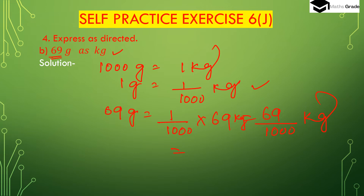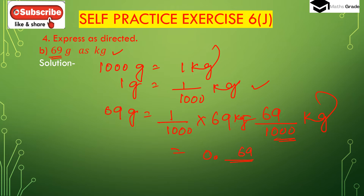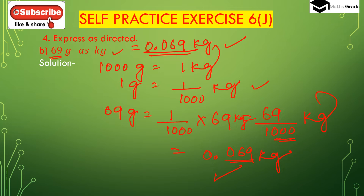In the denominator, 1000 has 3 zeros, so we have to place three digits after the decimal place. But in the numerator there are only two digits, so we have to place one zero before the digit 6. It will be 0.069 kg. If the numerator has only a single digit, we place two zeros before it. So 69 grams is 0.069 kg.